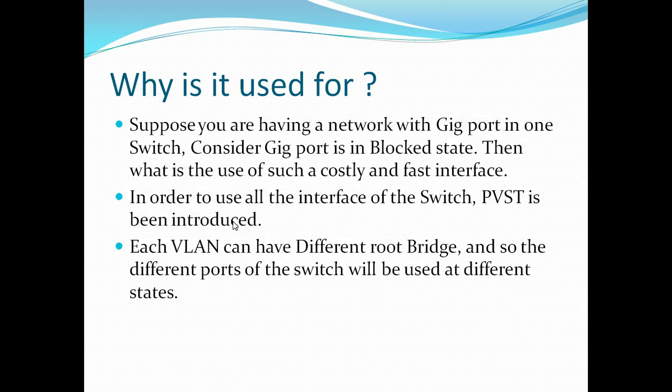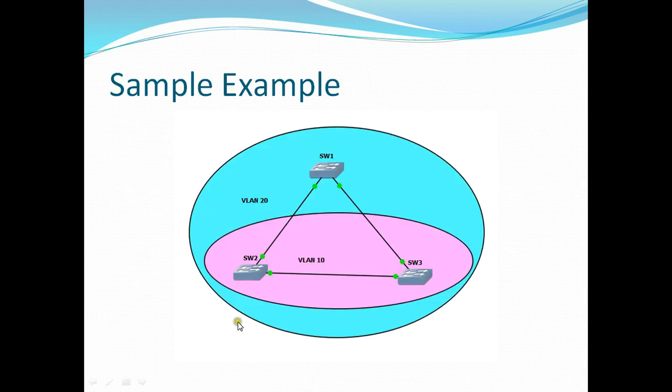So why is it being used? Suppose we are having a network with a Gigabit port. Consider three switches. Consider this example over here. Suppose you are having a Gigabit interface here. This is a Gigabit interface, and switch 1 has become a root bridge.